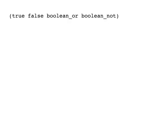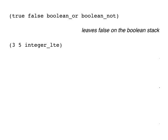A few examples without the diagram. Here's a program using or and not on booleans, which leaves false on the boolean stack. This one uses an integer comparison instruction, which pops two integers and pushes a boolean indicating whether the deeper one is less than or equal to the shallower one, which it is in this case. The value left on the boolean stack is true.